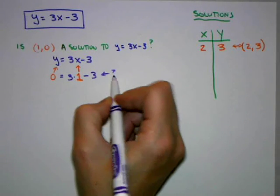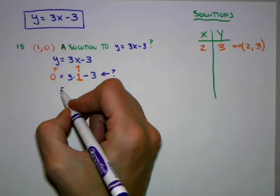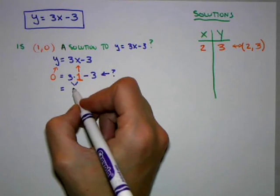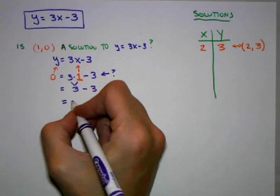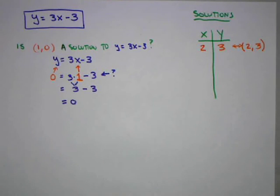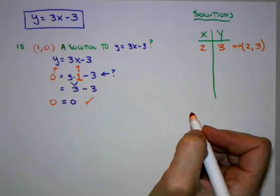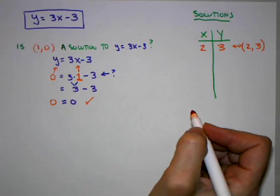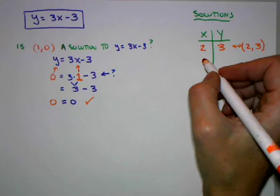Now I'm going to see if this equation balances. Is that true? Is 0 equal to 3 times 1 minus 3? Well, let's see: 3 times 1 is 3, and 3 minus 3 is 0. So when I plug in (1,0) in this equation, it does indeed balance. That means the point (1,0) is also a solution to y = 3x - 3.